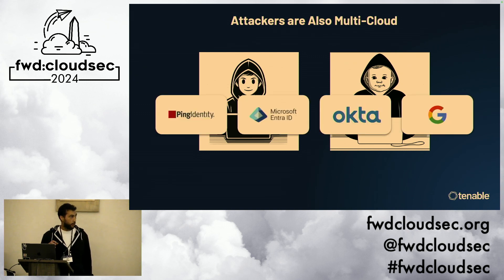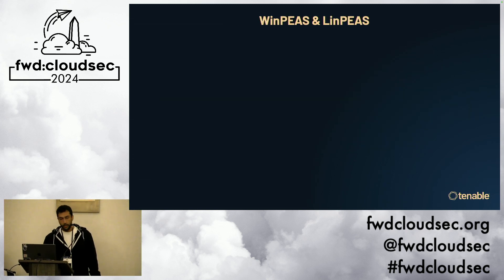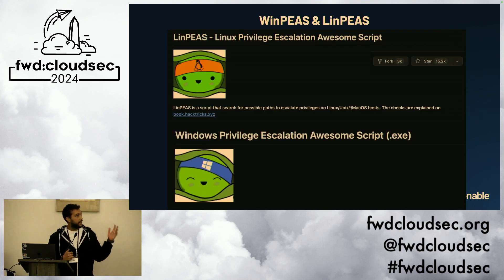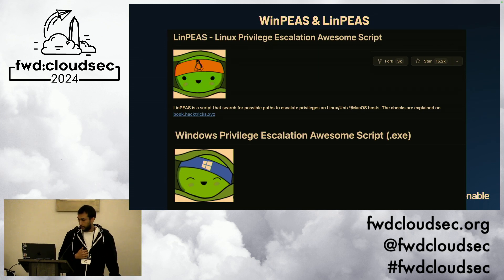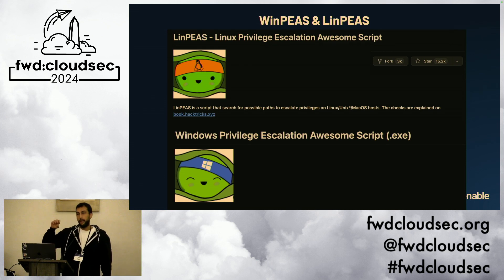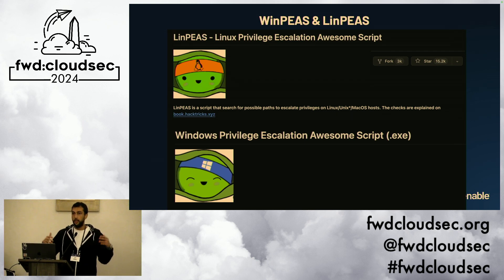One of the best targets for attackers in this kind of attack is the IDP itself. We know that attackers and red teams are already using tools that have the capability of multi-cloud credentials extraction. A few examples would be LinPEAS and WinPEAS — both are open source projects with more than 15,000 stars. PEAS stands for Privilege Escalation Awesome Scripts, and these tools help attackers understand privilege escalation opportunities within a workload.